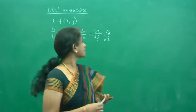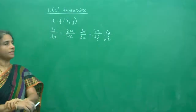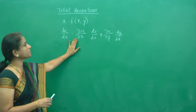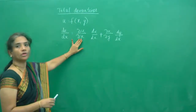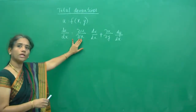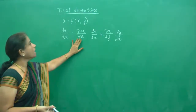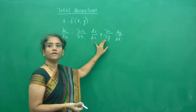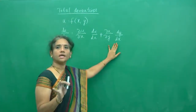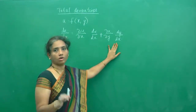Hi everybody. In this class, we are going to study about total derivatives. You are comfortable with partial derivatives — differentiating with respect to x. If you are doing a partial derivative, you know y is considered as a constant and even z is considered as a constant. Same way, when you are differentiating with respect to y partially, you know all other variables x and z are considered to be constants.